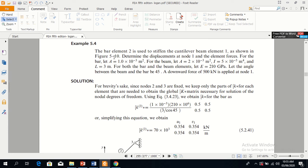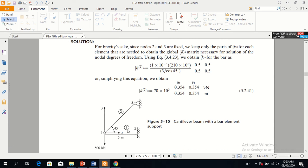In this example, a bar element 2 is used to stiffen the cantilever beam, element 1. You can see here, this is a beam element, 1 is beam element, and 2 is a bar element.